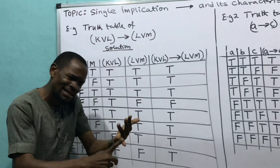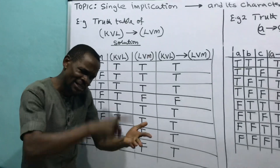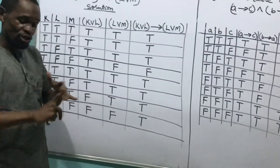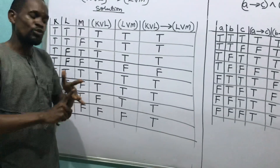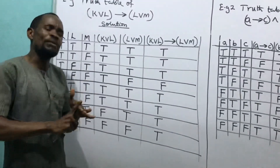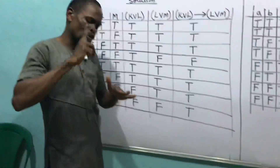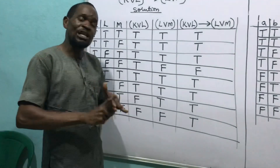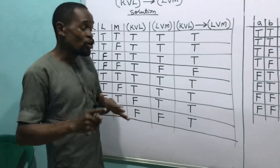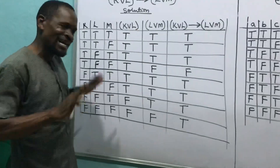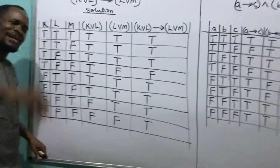We have done AND gate and OR gate. We are now on single implication. After this we go to double implication, then after double implication we go to joint denier, and after joint denier we go to exclusive OR gate — that's where it ends.